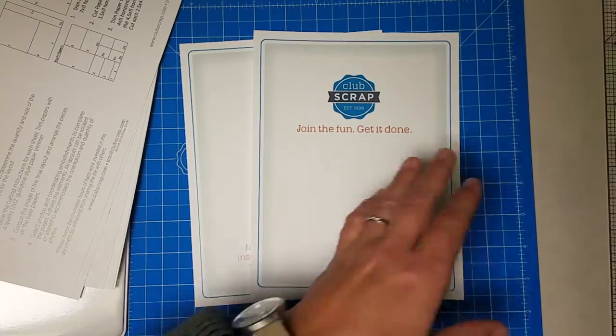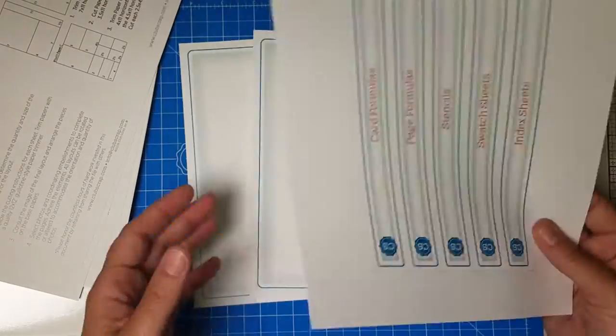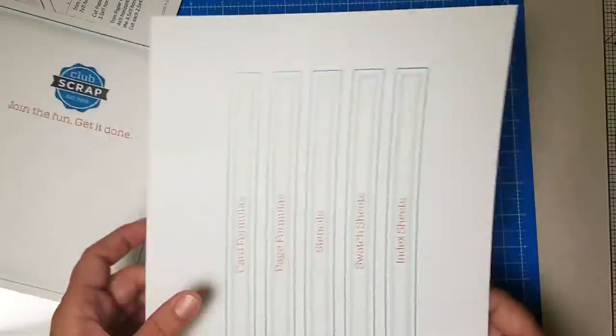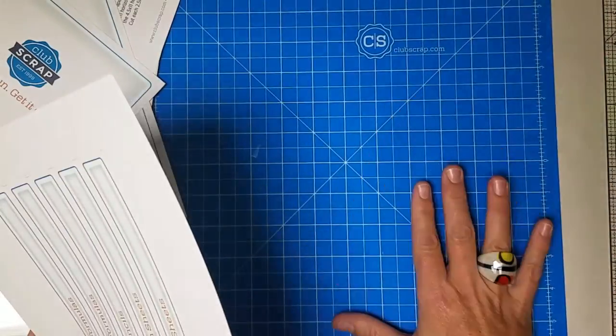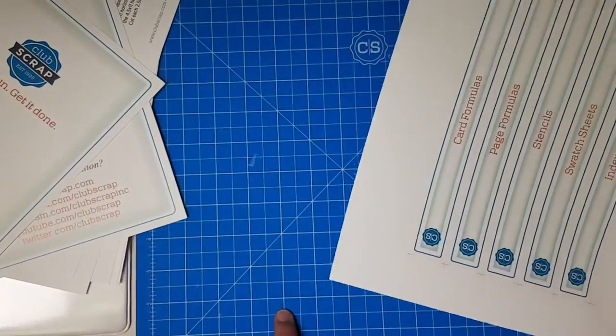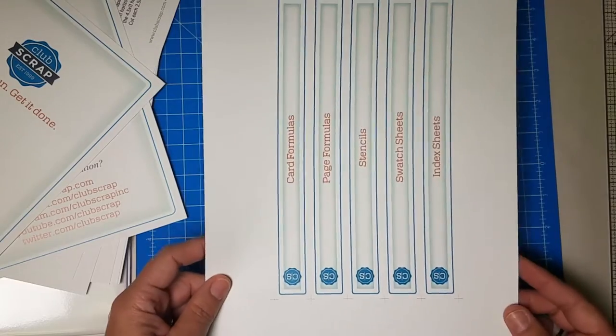Now another way you can do all of this is with a craft knife and cutting mat. I'm using Club Scrap's beautiful blue cutting mat here. It measures 13 by 13, so it's a great size for scrapbooking.